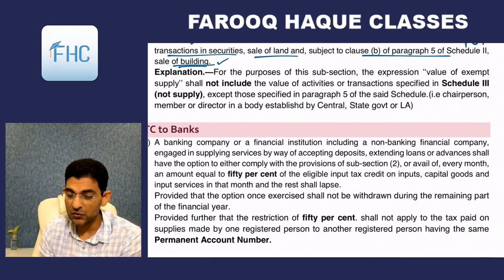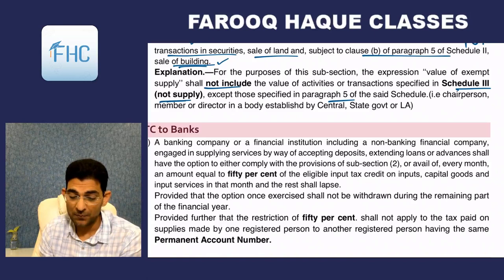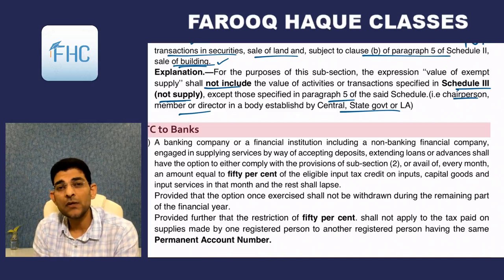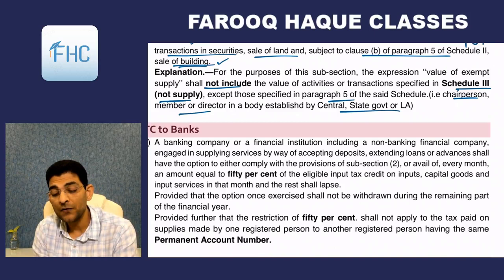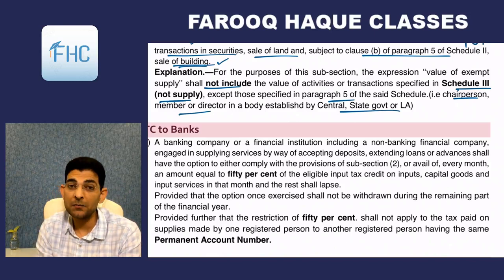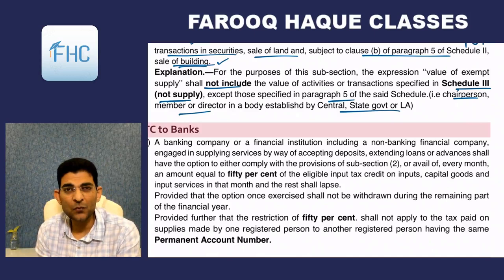The value of exempt supplies shall not include the value of activities or transactions specified in Schedule 3 — the negative list where tax is not imposable — except those in para 5. Schedule 3 items are non-leviable, whereas exempt supplies are those which are technically taxable but on which the government has removed the tax.